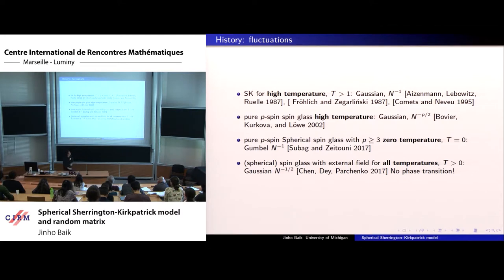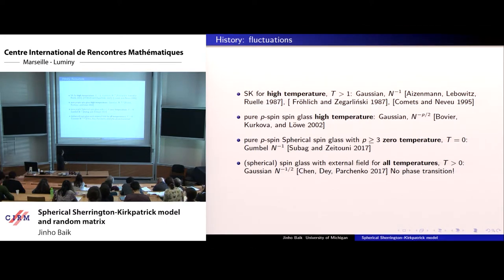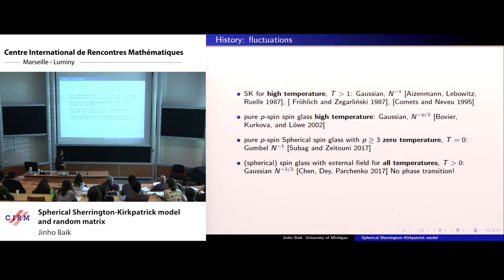For the low temperature case, things are harder. In the spherical case with p equals two (quadratic), it is the eigenvalue random matrix problem — the largest eigenvalue gives Tracy-Widom. However, if the degree is three or higher, the zero temperature case (maximization) has completely different fluctuations: the work of Subag and Zeitouni shows fluctuations of order n times one over n to the one-third, given by Gumbel. This is because for degree three or higher, the number of critical points of the Hamiltonian on the sphere grows exponentially in n, rather than the polynomial 2n critical points in the quadratic case.